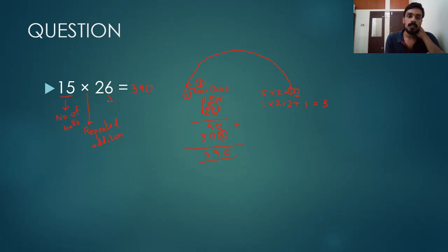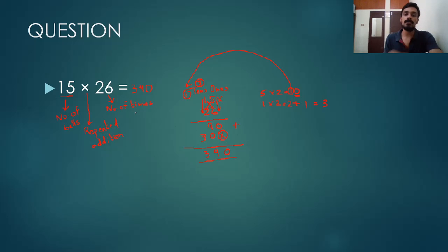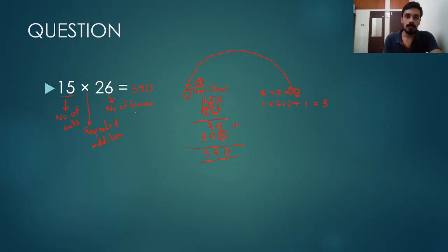The number of times is 26. So 15 balls repeated and added 26 times gives us 390. I hope this is clear to everyone. Now let's see 3-digit multiplication.